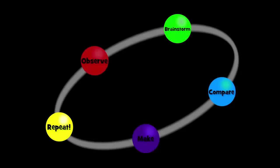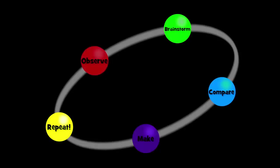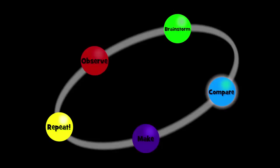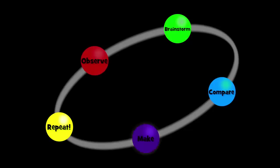Let's recap the process we took: we made an observation that it's difficult to practice volleyball by yourself. We brainstormed solutions to that problem and compared ideas to pick our favorite one. We made prototypes to test those solutions, and then we repeated some of those steps in order to find even better solutions. That's how we came up with a way to solve the problem of practicing volleyball on your own.